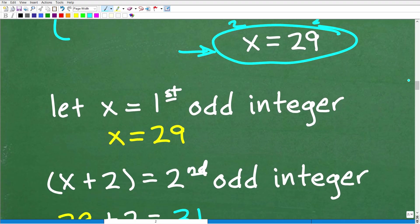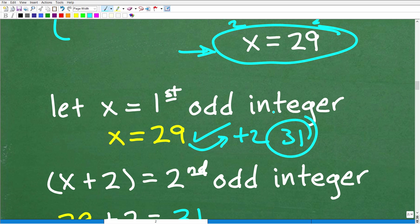Well, let's go back to when we established our variables. X was the first odd integer, so our first odd integer is 29. And we just deduce that plus two, when we add two to this one, we're going to get to our second one, which is 31.